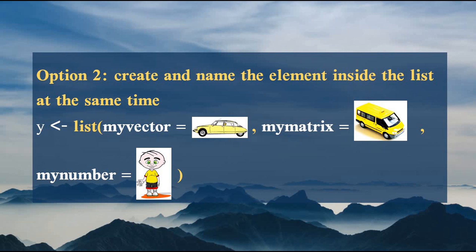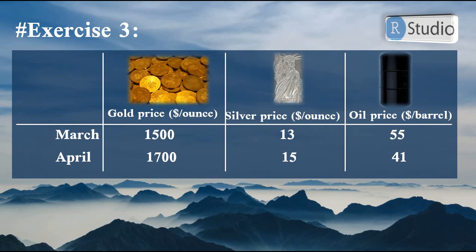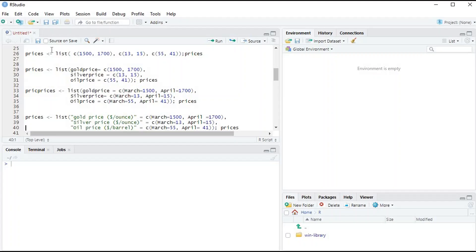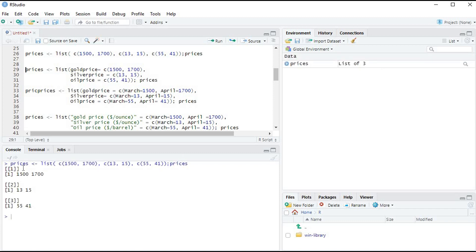In exercise three we will create a list containing gold, silver, and oil prices for March and April. We use the list() function with three vectors: the first for gold prices, the second for silver prices, and the third for oil prices. Running this basic list in RStudio, we see the first, second, and third elements corresponding to gold, silver, and oil.